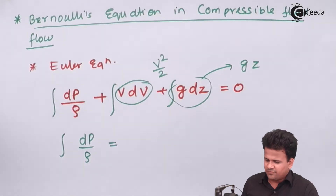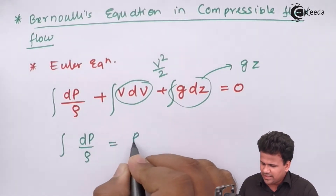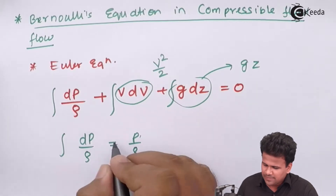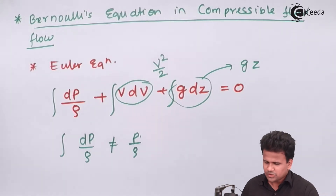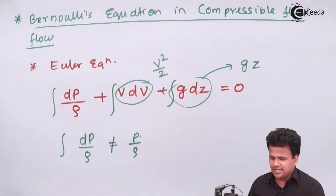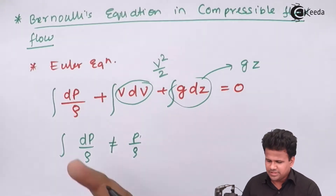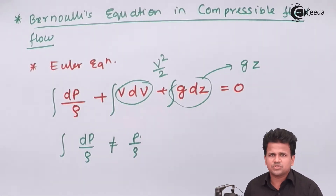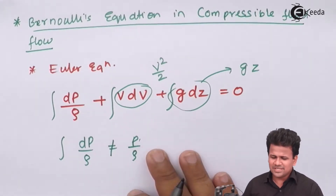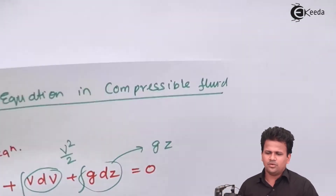This is because in incompressible fluid flow we write the integral as p/ρ, but for compressible fluid flow we cannot do that, as the density is also changing. So we must consider various types of processes in which pressure and density are related. One basic process is the isothermal process, which we have already studied in thermodynamics.